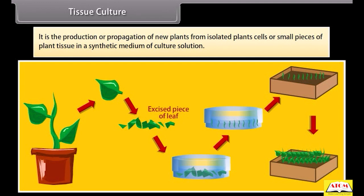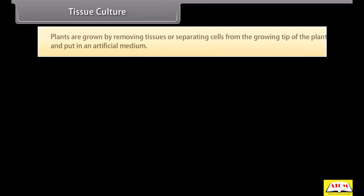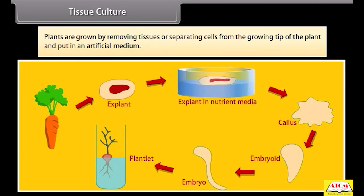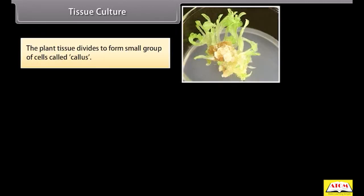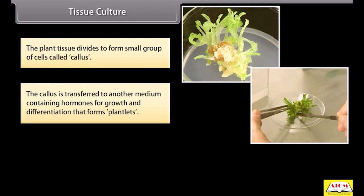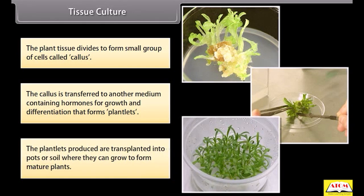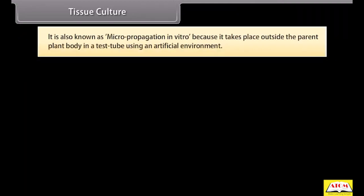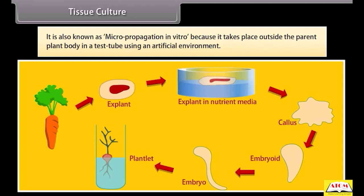Tissue culture is the production or propagation of new plants from isolated plant cells or small pieces of plant tissue in a synthetic medium or culture solution. Plants are grown by removing tissues or separating cells from the growing tip of the plant and placing them in an artificial medium. The plant tissue divides to form a small group of cells called callus. The callus is transferred to another medium containing hormones for growth and differentiation, forming plantlets. These plantlets are then transplanted into pots or soil where they grow into mature plants. It is also known as micropropagation in vitro, because it takes place outside the parent plant body in a test tube using an artificial environment.